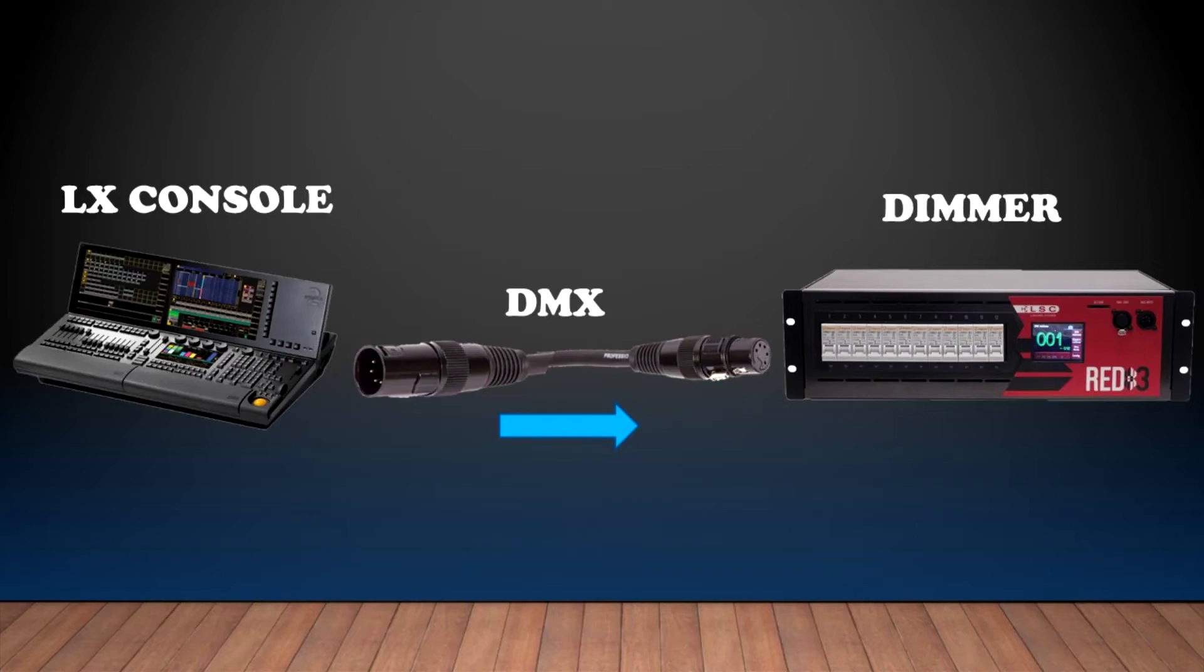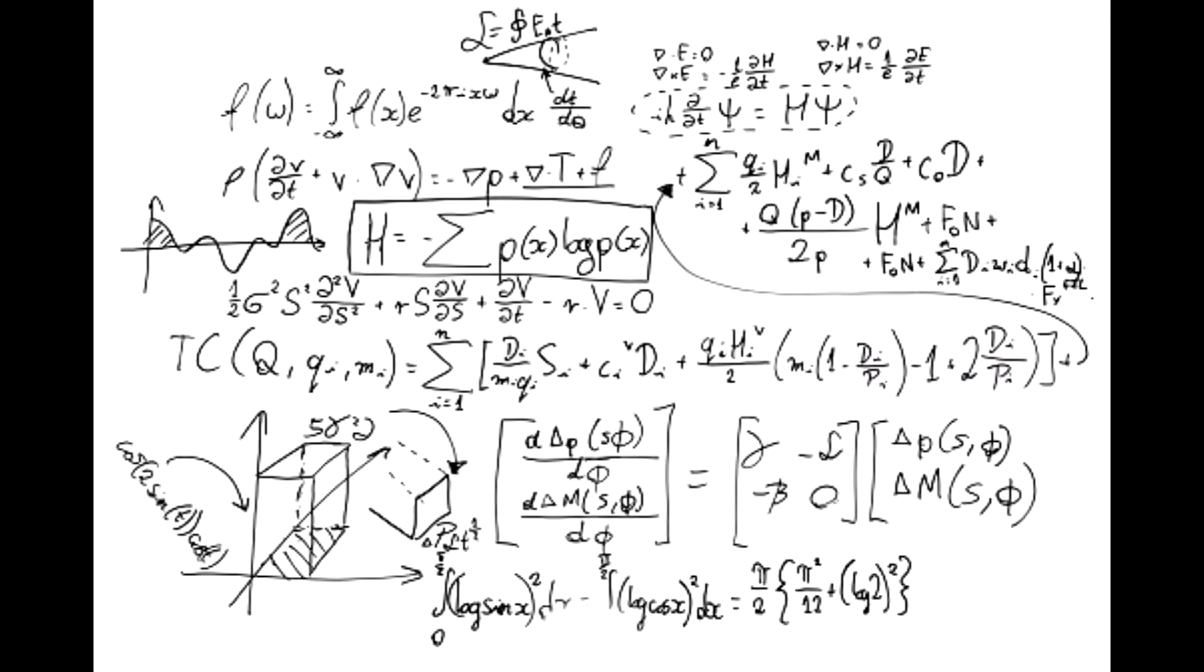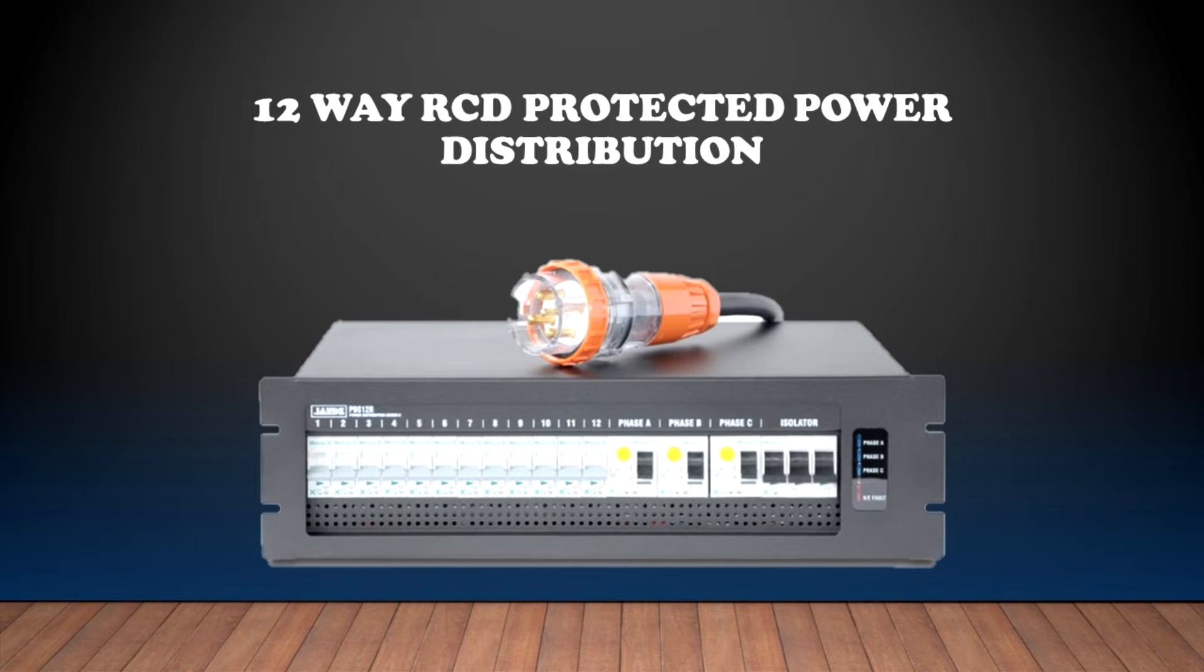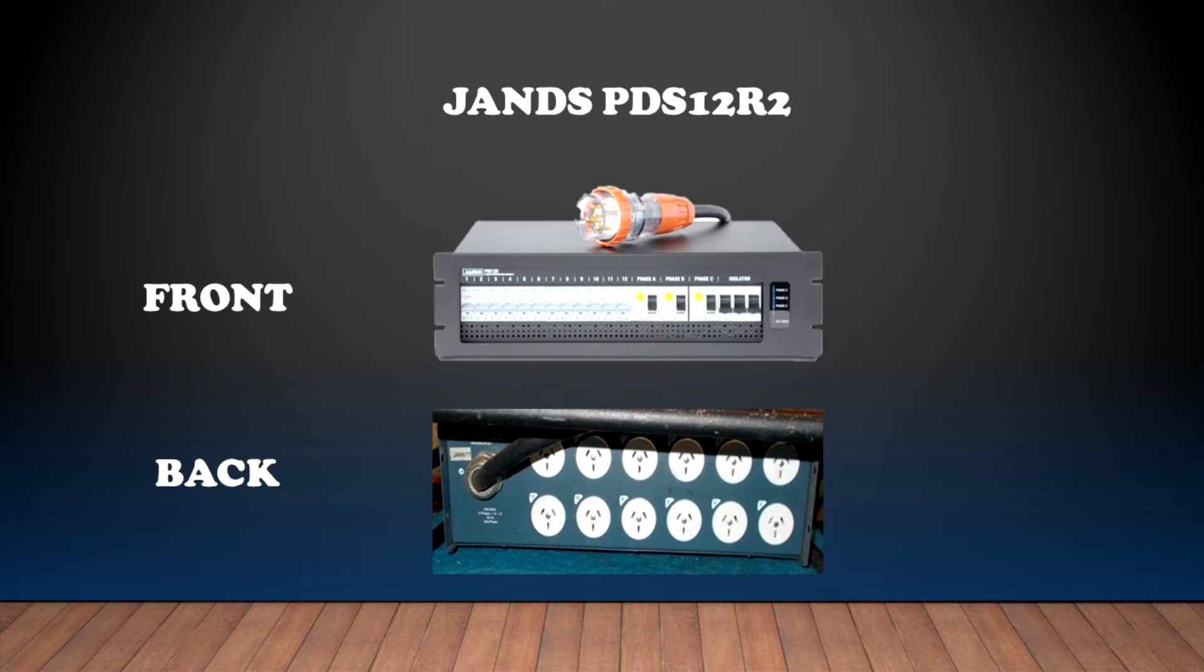So in order for you to run all of these lights, all of these incandescent lights safely, you use a dimmer. And before we start doing some power calculation, I would like to mention the three-phase distro system as well that we had in our gear list. And just so you understand a little bit better, a three-phase distro will ensure and provide a better power distribution than the regular wall sockets we're used to. The one we picked is a Jands PDS-12 R2.